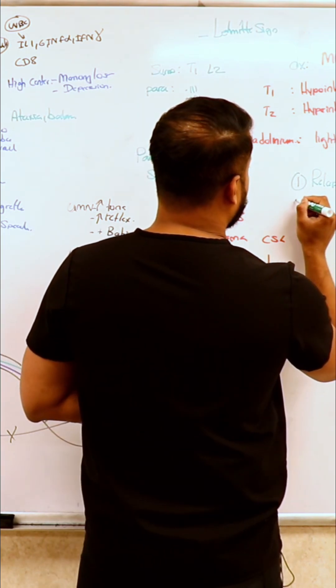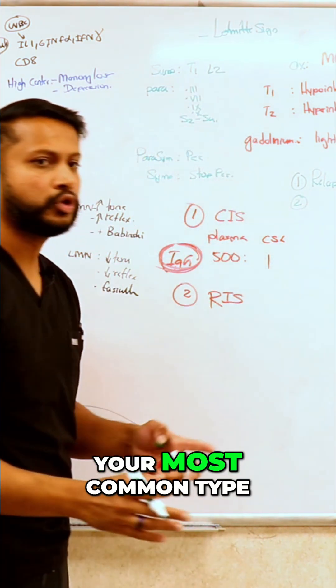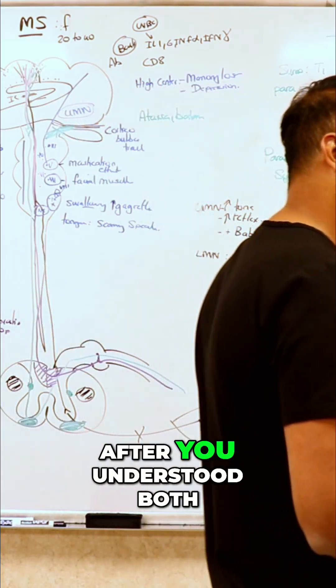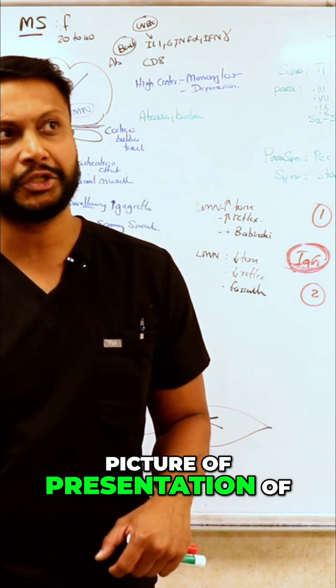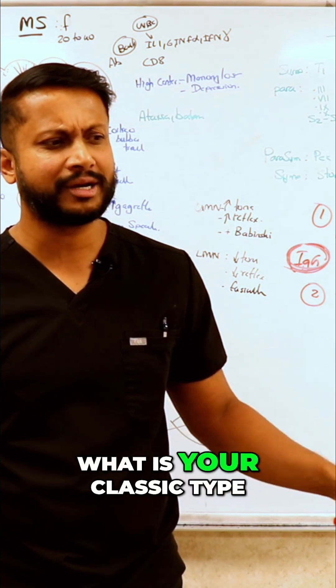So if you look at it, relapsing and remitting is your most common type. Now, after you understood both of this, let's go into the traditional picture of presentation of MS patients. What is your classic type?